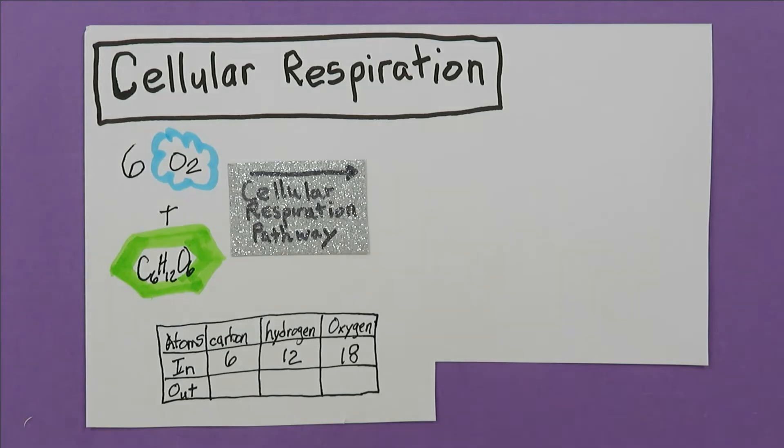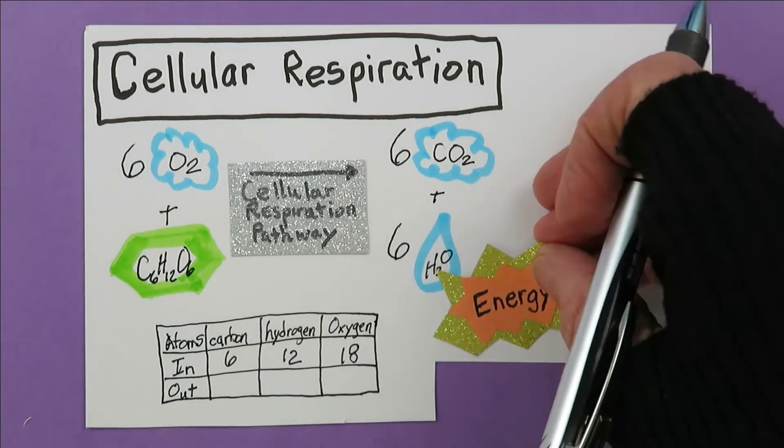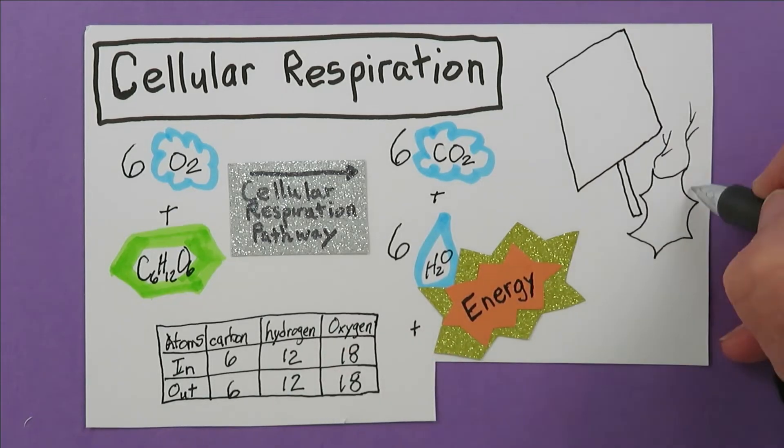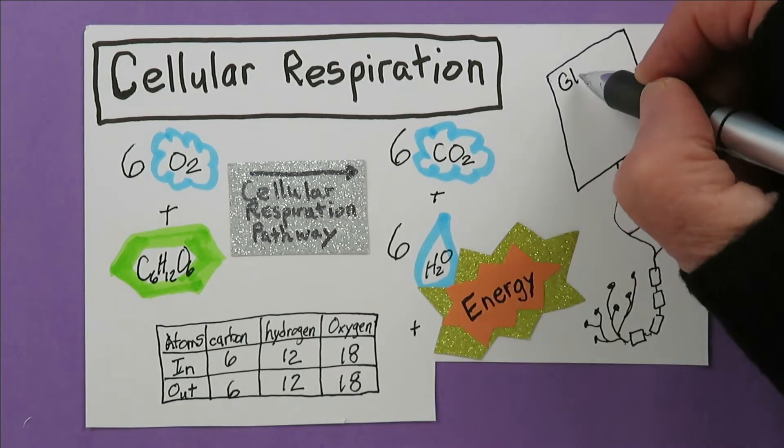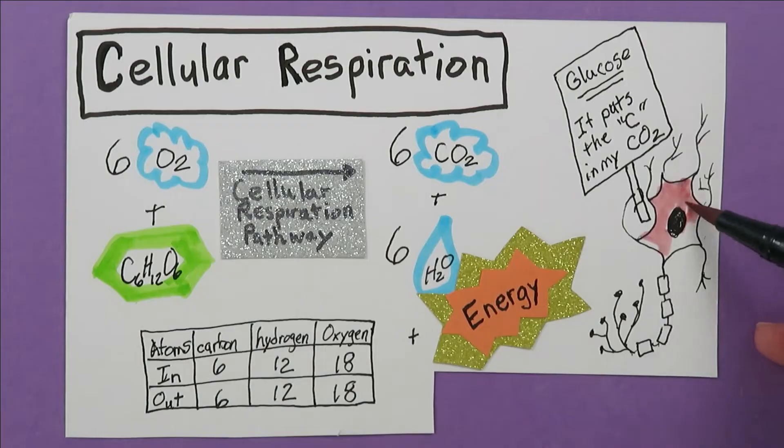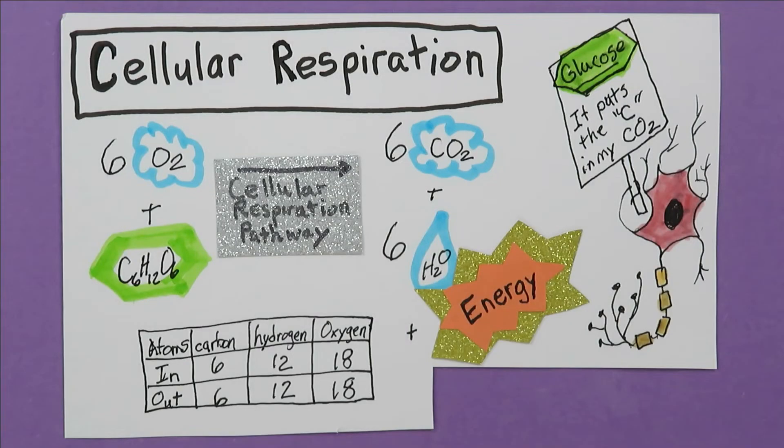The same atoms came out as six carbon dioxides and six waters. Glucose really puts the carbons in the carbon dioxide we exhale.